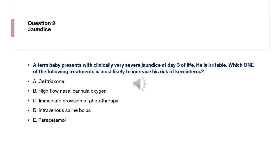Question 2 is about jaundice. A term baby presents with clinically very severe jaundice at day 3 of life and is irritable. Which one of the following treatments is most likely to increase his risk of kernicterus? Options include: ceftriaxone, high-flow cannula, immediate phototherapy with intravenous saline bolus, or paracetamol.